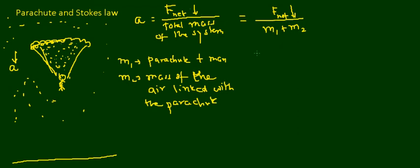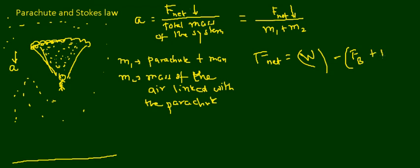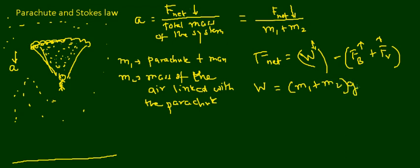Now let us look at F_net. The net force in the downward direction equals the sum of all downward forces minus the sum of all upward forces. The downward force is the weight W of the system, while the upward forces are the buoyant force and the viscous forces. Weight W equals (m1 + m2) times g.